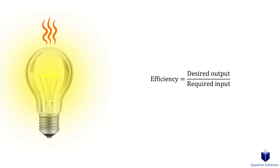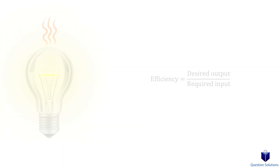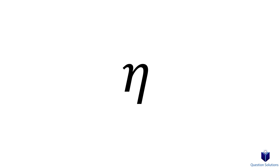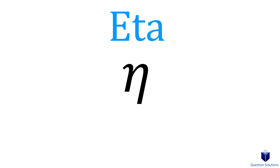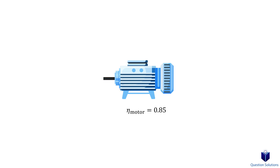The efficiency is low since not all the energy we give it turns to light. We use the Greek letter eta to represent efficiency, so if a motor is 85% efficient, we would write it like this.